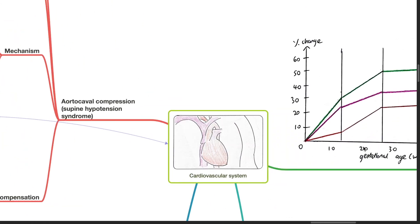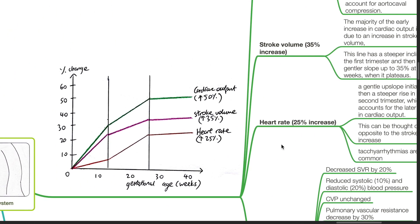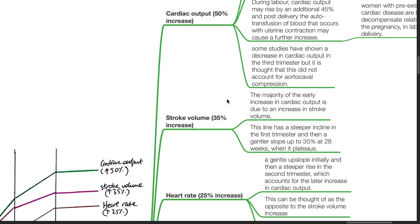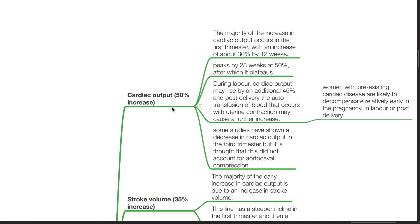Changes in the cardiovascular system. This graph shows that heart rate increases by 25%, stroke volume increases by 35%, and cardiac output increases by 50% from early to late pregnancy. The 50% increase in cardiac output: the majority of the increase occurs in the first trimester with an increase of about 30% by 12 weeks. It peaks by 28 weeks at 50%, after which it plateaus.